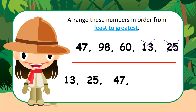47 — and let's cross that out. Boys and girls, what's next? 60 — very good! And let's cross that out too. So that means our biggest number, our greatest number, is 98. Wonderful job! Let's move on.